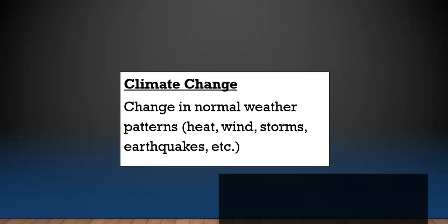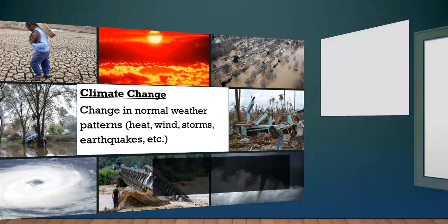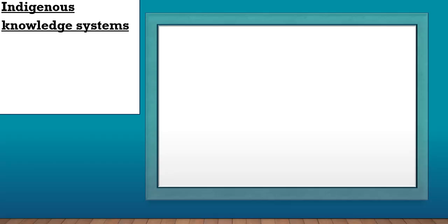Climate change refers to a change in normal weather patterns — heat, wind, storms, and earthquakes. When you start to see these things, it's an indication that the climate is changing. If there is too much heat, too much wind, too many storms, and sometimes earthquakes, that is climate change. We can see those events in the images.